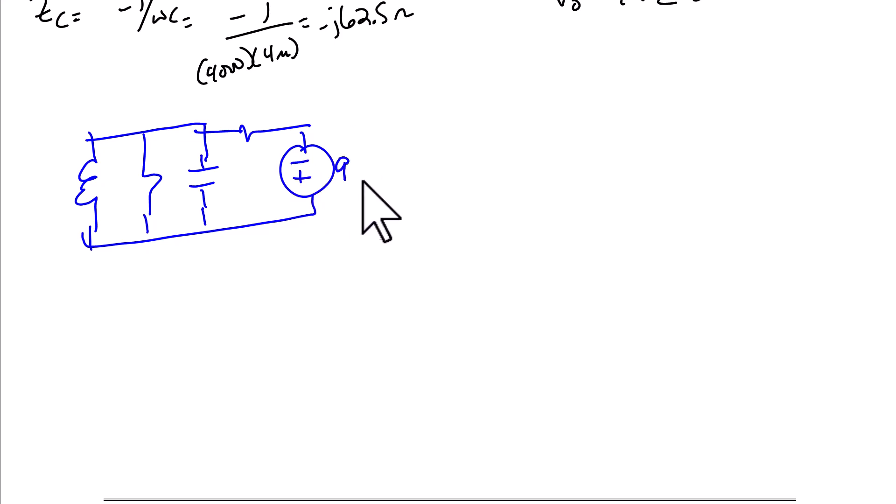So it's 96 with an angle of zero degrees and the units are volts. The value of the inductor, ZL equals J omega L, is going to be J times 8000 times 15 millihenry, which equals J 120 ohms.